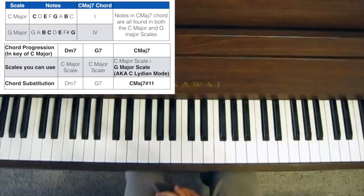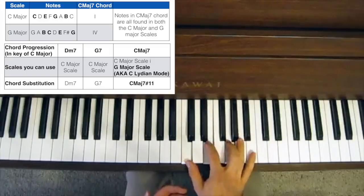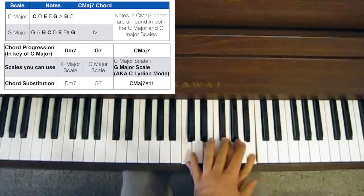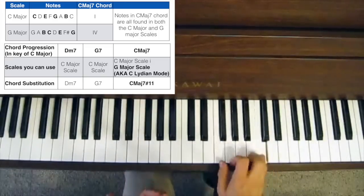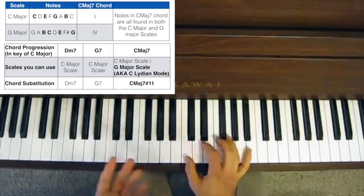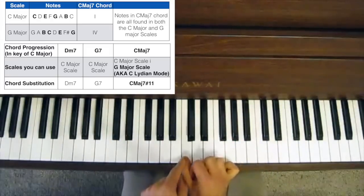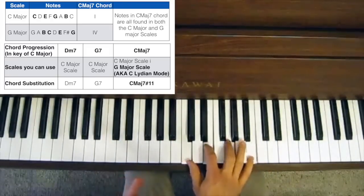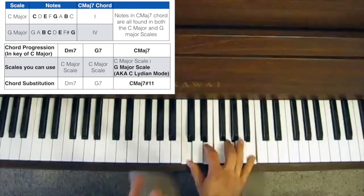Let's take the chord C major 7 — so we've got C, E, G and B. That chord can be derived from the C major scale — no sharps or flats. That's the 1 chord of the C major scale, so we start on the C and we build up in thirds, and we build a C major 7.